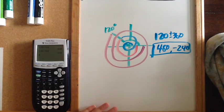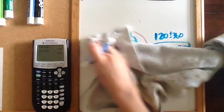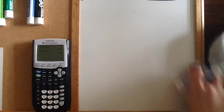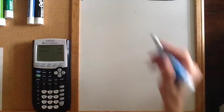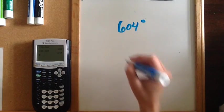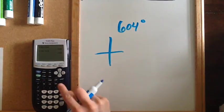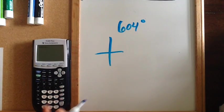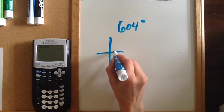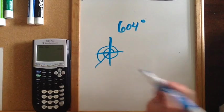Now what if I were to give you something like 604 degrees? Well, 604 degrees is already past 360. So if we do 604 and take away 360, we've gone around one full time and then I'm going to 244.